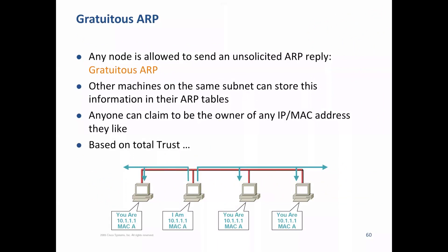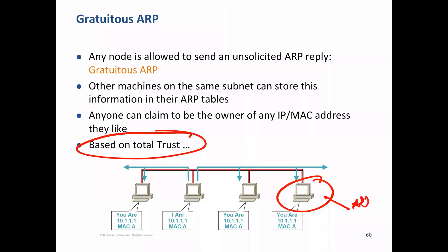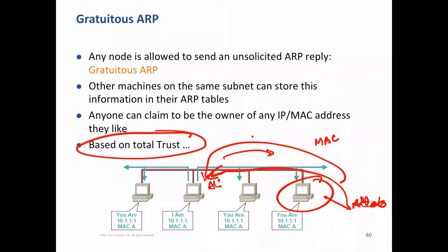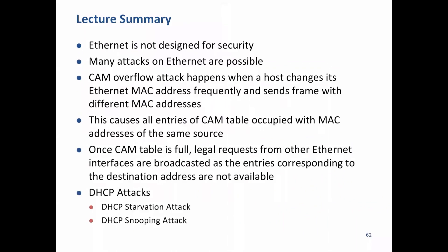ARP was designed assuming everyone in the world is honest — total trust. Anyone can respond to an ARP request. This is the problem: if there is an attacker on the LAN, it can supply a wrong MAC address — its own MAC — in response to Alice's ARP query for a specific IP address. Alice may trust this response, causing her traffic to go to the attacker. Please go through the presentation slides to understand these attacks better.